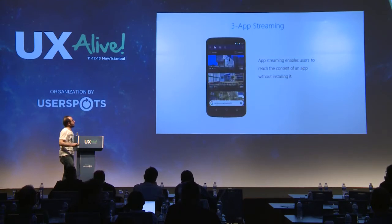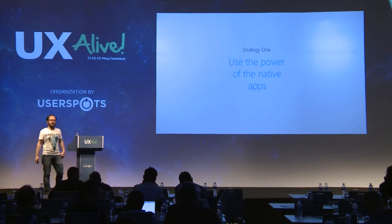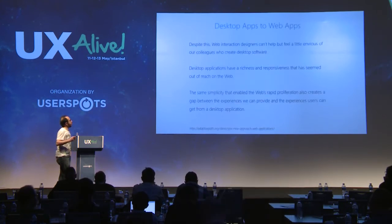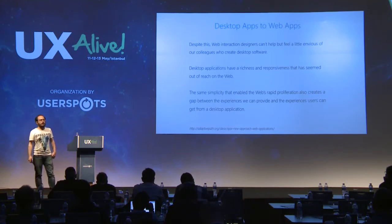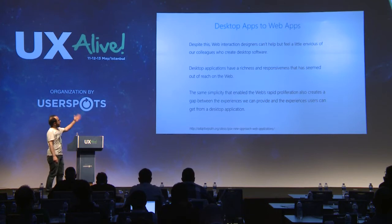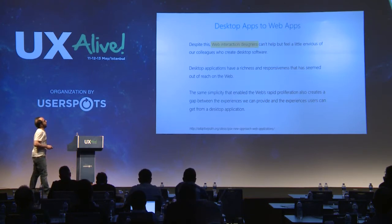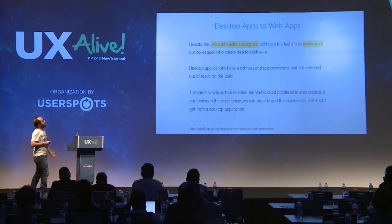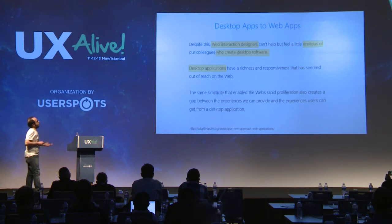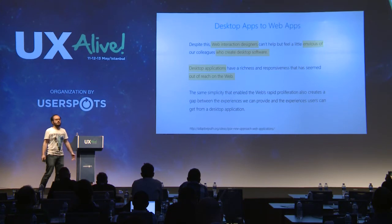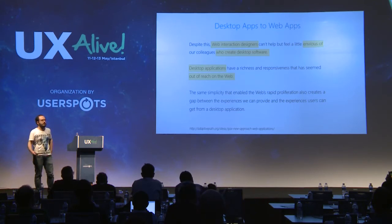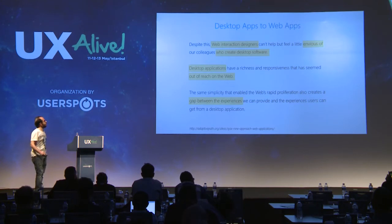Before going further — that was strategy one, use the power of native apps more — I want to take you back to 2005, 11 years ago. This is a blog post from 2005 published on Adaptive Path's blog. It talks about how web interaction designers were envious of people who create desktop software. The blog post tells us that since desktop applications had a really rich experience, website designers were kind of envious because they couldn't provide the same level of experience that desktop applications provided.